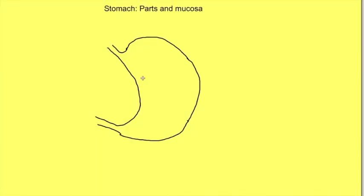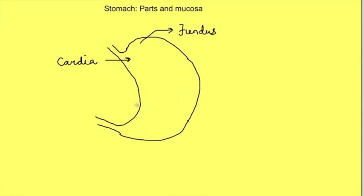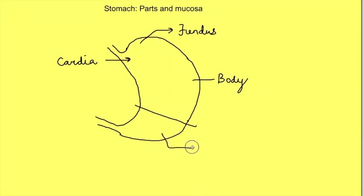This is a schematic diagram showing the stomach. The stomach is divided into four parts anatomically. The part in continuation of the esophagus is the cardia. The part projecting as a dome is known as the fundus. The rest of the stomach is divided into the body, and the last 20% is the antrum. The antrum continues as the pylorus.